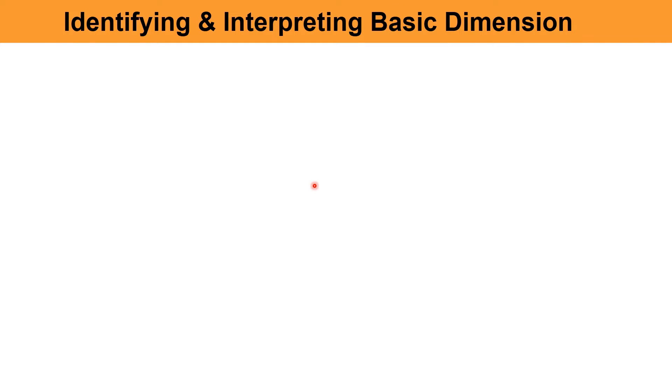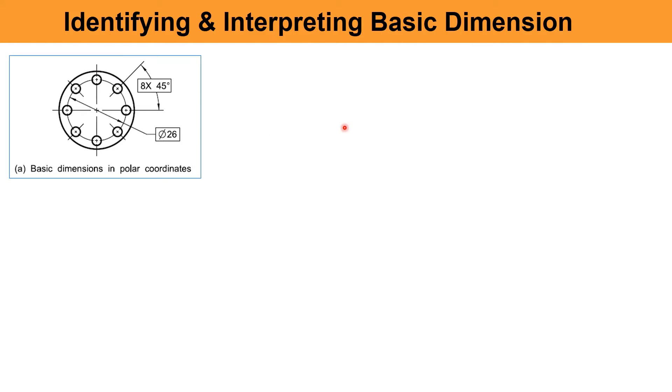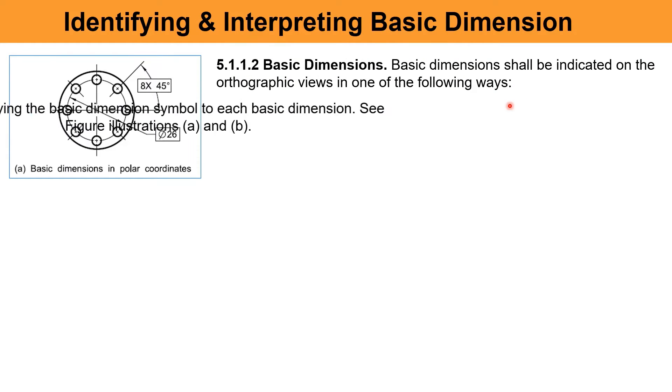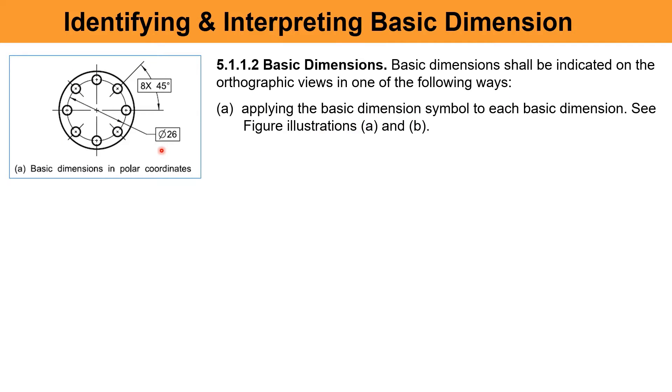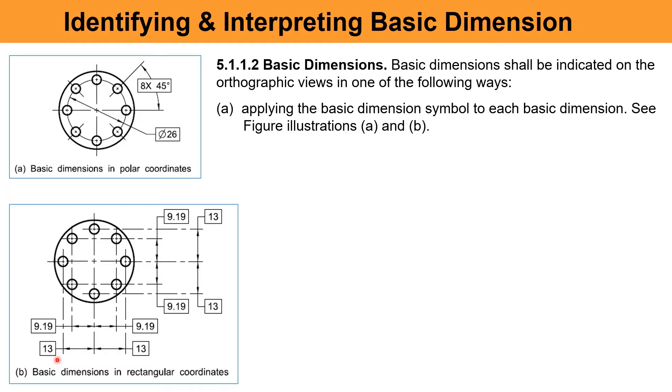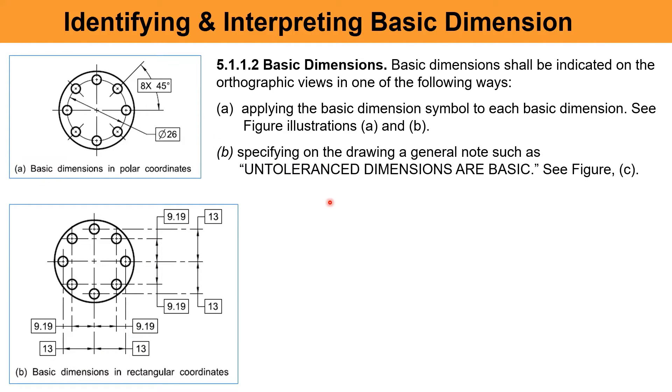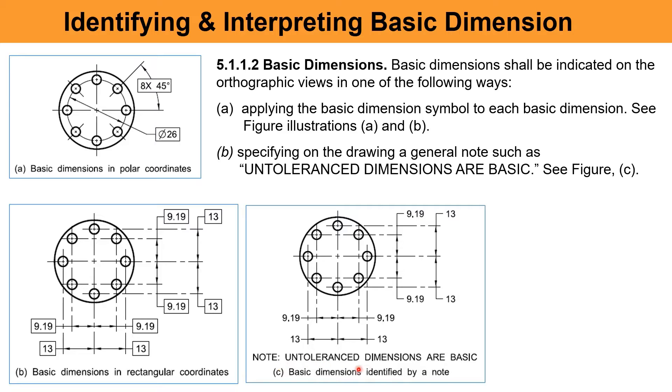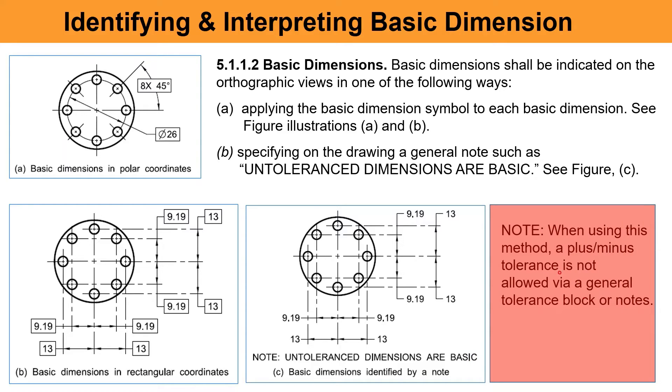How to identify and interpret basic dimensions? Basic dimensions shall be indicated on the orthographic view in one of the following ways: Applying the basic dimension symbol to each basic dimension, see figure illustration A and figure B. Specifying on the drawing a general note such as: Untoleranced dimensions are basic, see figure C. A note is: when using this method, a plus minus tolerance is not allowed via a general tolerance block or note.